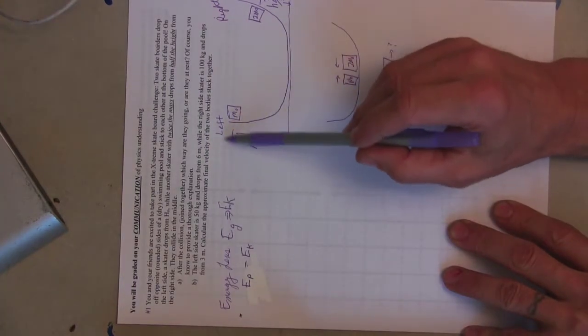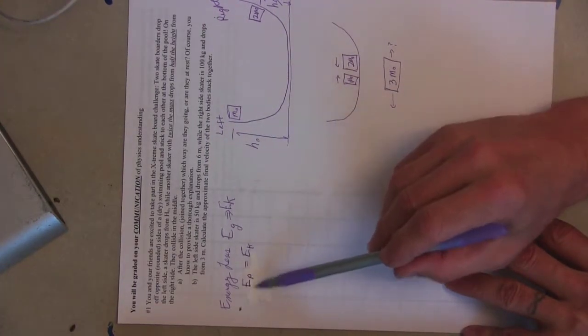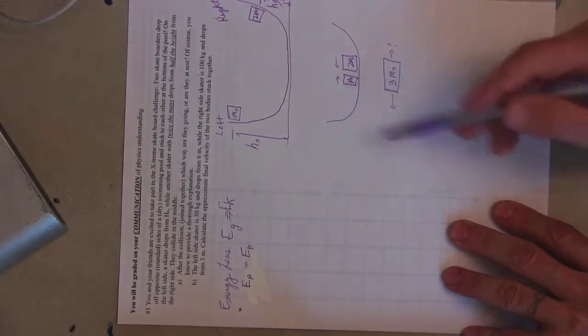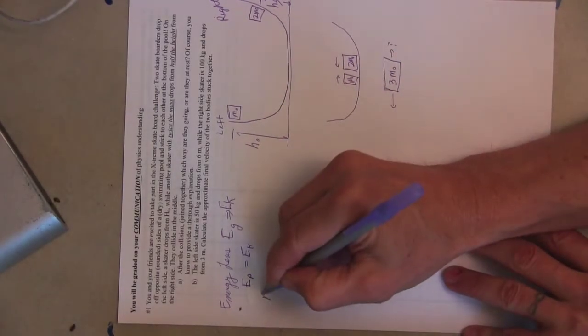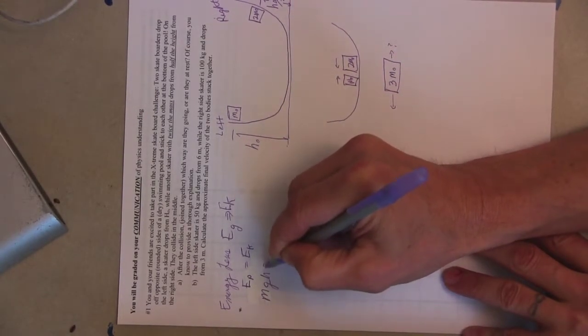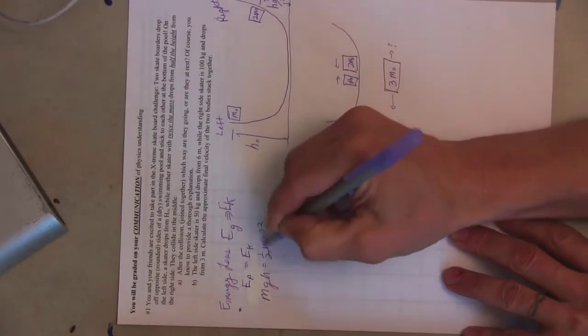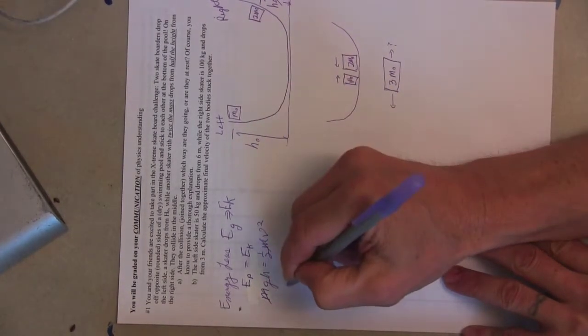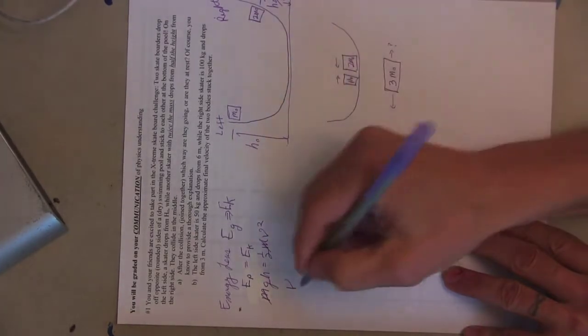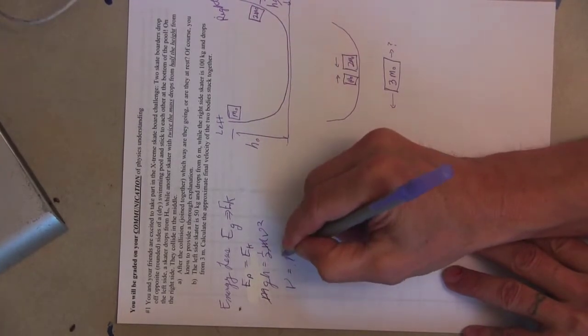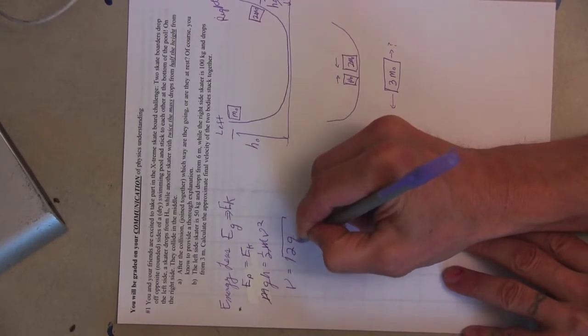Because the initial energy is only potential energy, so that's my initial energy. And my final energy is the kinetic energy at the end. And we have mgh is equal to one-half mv squared. The masses cancel, and I end up with v final at the bottom is equal to the square root of 2 times gh.